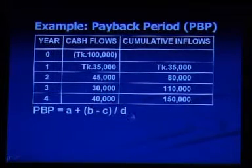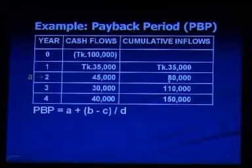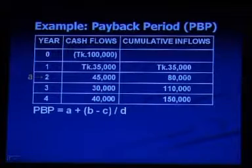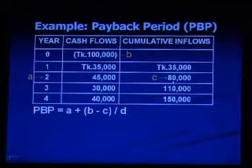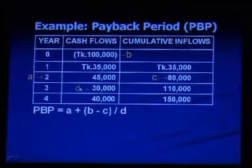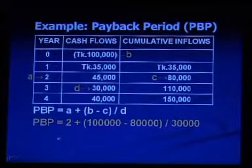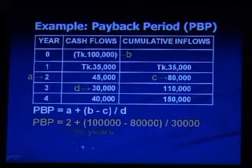To calculate payback period, we use the formula where A is the last year for which cumulative inflows do not exceed the initial cash outflow, B is the initial cash outflow (taka 1 lakh), C is the cumulative inflow for year A, and D is the next year's individual cash flows. Putting the values in: payback period = 2 + (1,00,000 − 80,000) / 30,000 = 2.66 years.